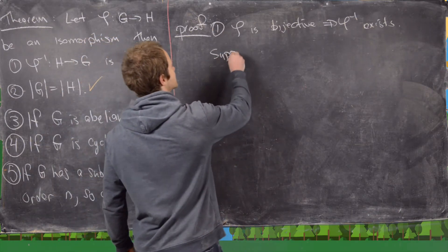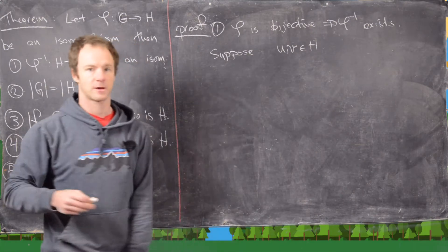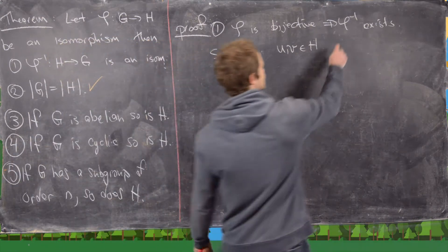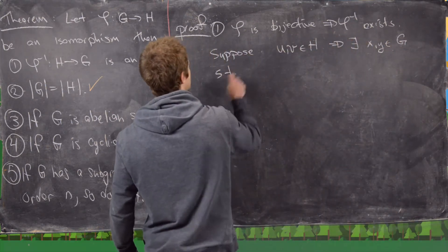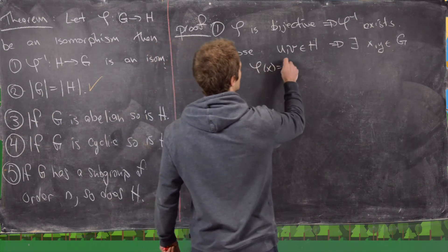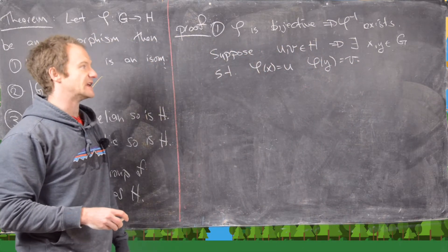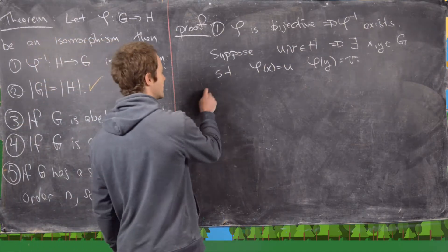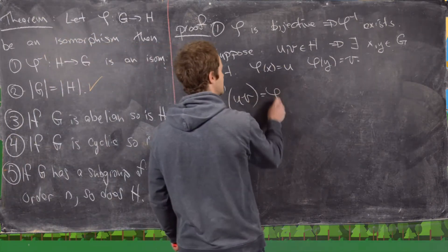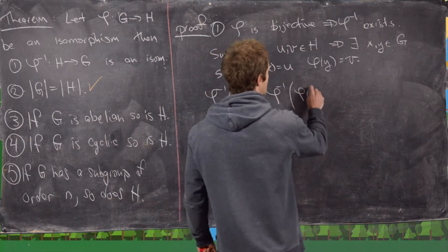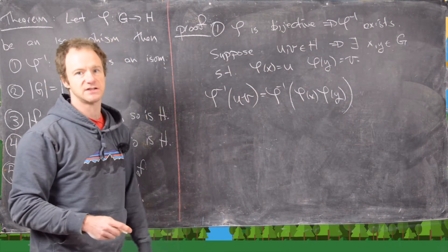The next thing we want to do is show that phi inverse satisfies the homomorphism condition for an isomorphism. Suppose that U and V are in H. That tells us there exist X and Y in G such that phi of X equals U and phi of Y equals V, and we know that's true because phi is onto.